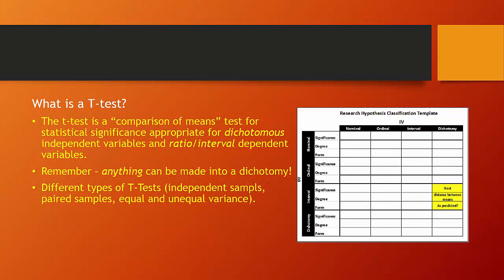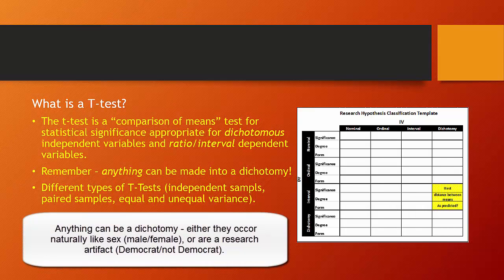As we break a dependent variable at the interval/ratio level into subgroupings, we can now compare means. The t-test is a comparison of means and it determines whether the differences in means across these two subgroups are in fact statistically significant. When we break things into groups of two, we're creating dichotomies, and anything can be turned into a dichotomy. There are naturally occurring dichotomies — for example, male-female.